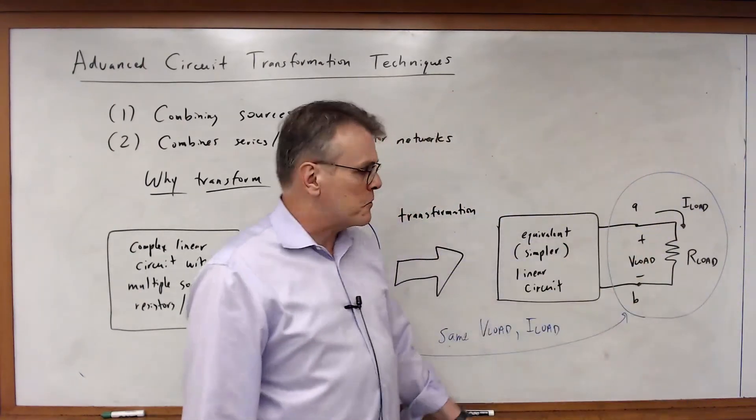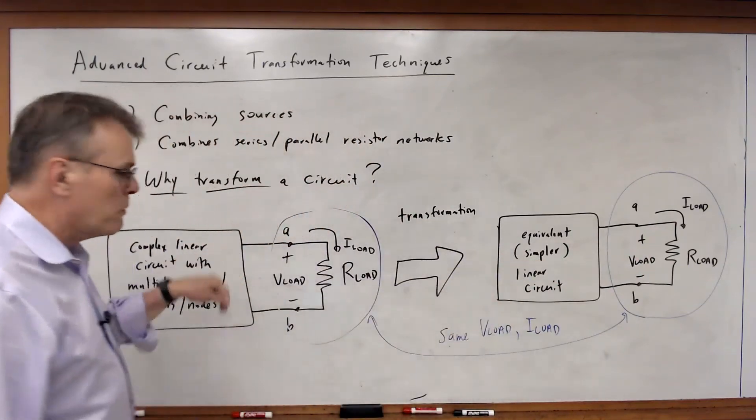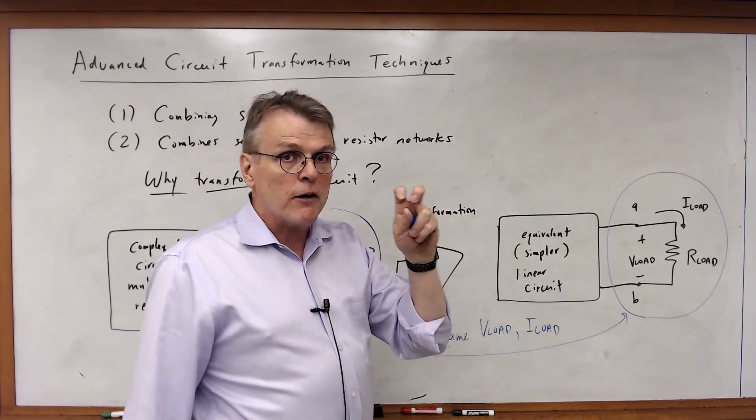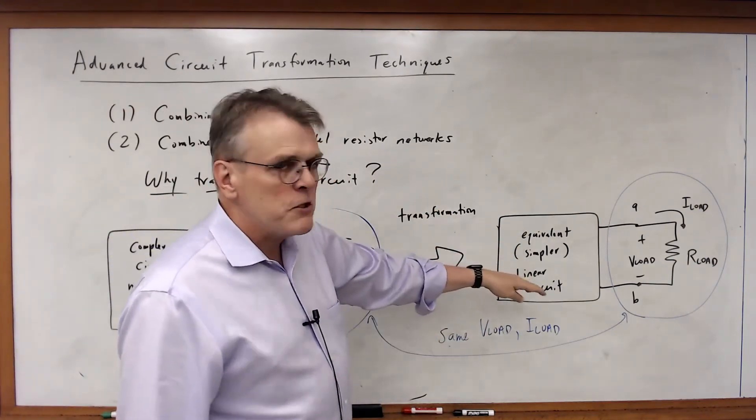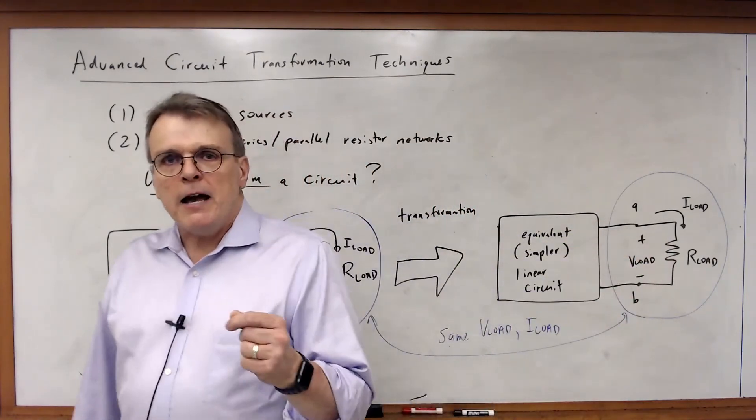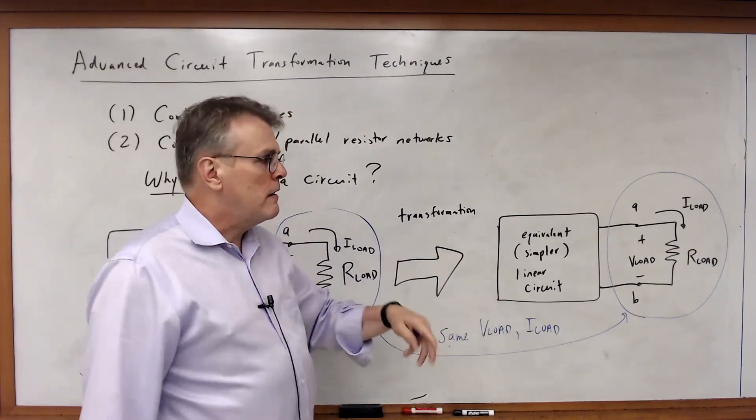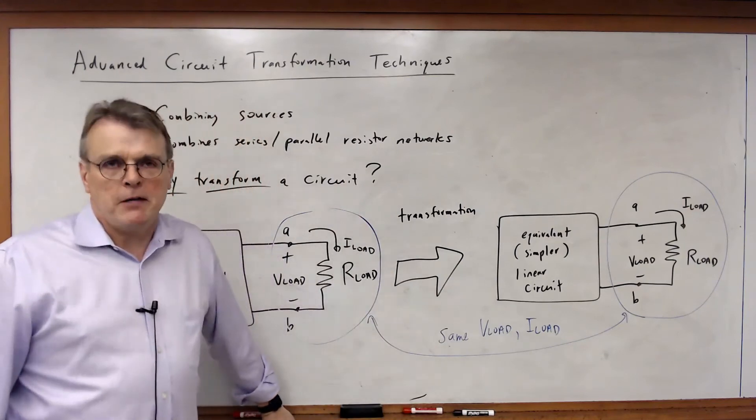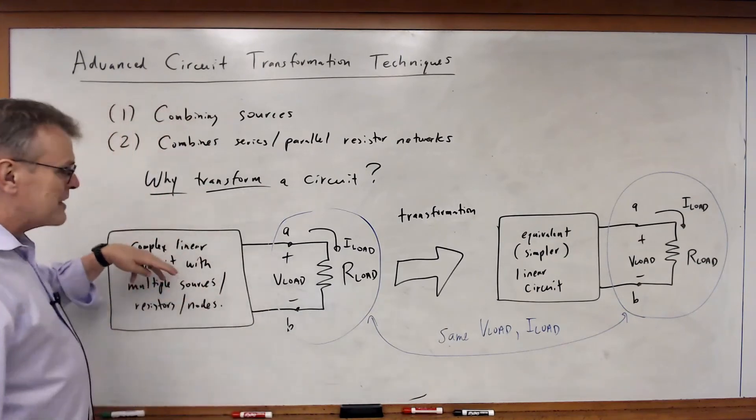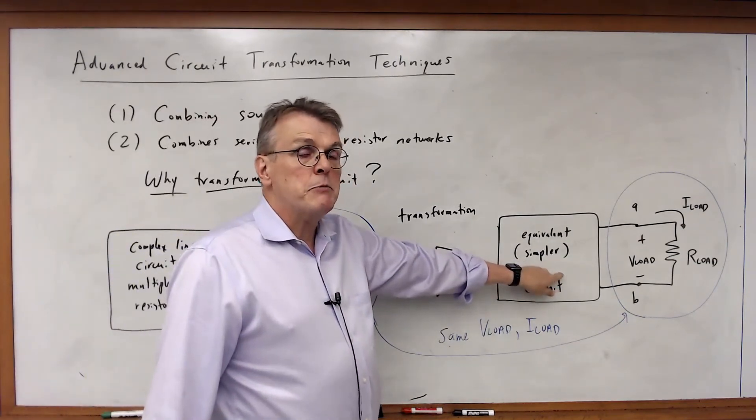Now if I have a hundred different load resistors, this can be a much, much simpler circuit to solve than this one was. So what I've done is I've created a simple linear equivalent that makes it much easier for me to figure out all the different values of V-load. This kind of transformation to create a simpler linear model is something that happens all the time in engineering. Not just in circuits, but everywhere. The idea of taking something very complex and creating something that is equivalent, but much, much easier to analyze.